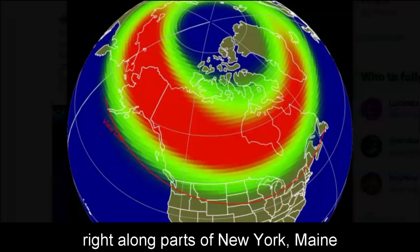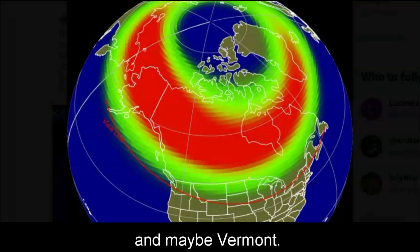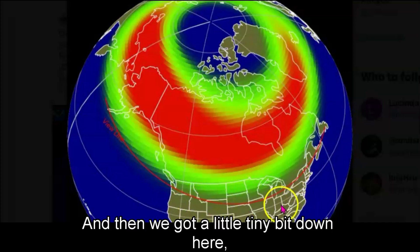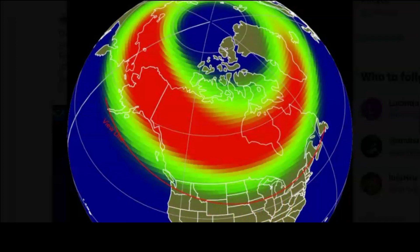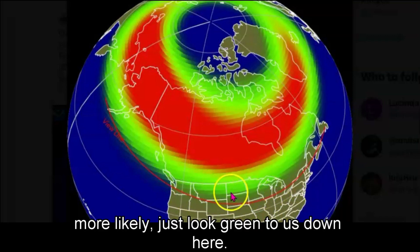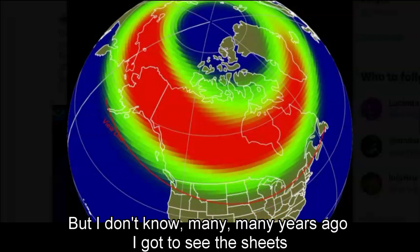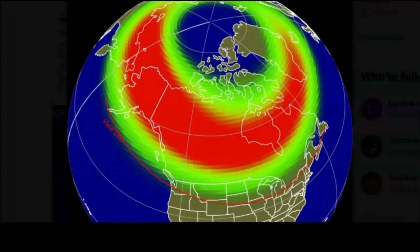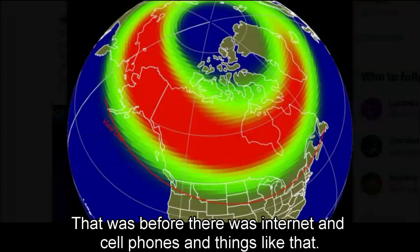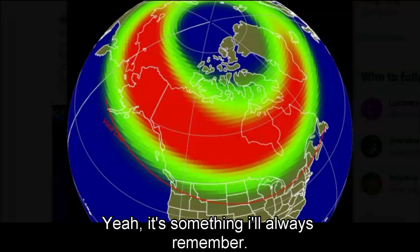So it does have South Dakota and it does have Michigan and right along parts of New York, Maine and maybe Vermont. And then we got a little tiny bit down here, maybe Missouri. Wouldn't that be wonderful? More likely just look green to us down here, but I don't know. Many, many years ago, I got to see the sheets of the Northern Lights here in South Dakota. That was before there was Internet and cell phones and things like that. It's something I'll always remember.